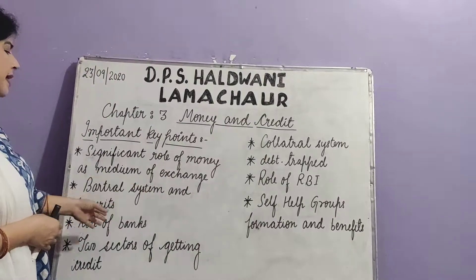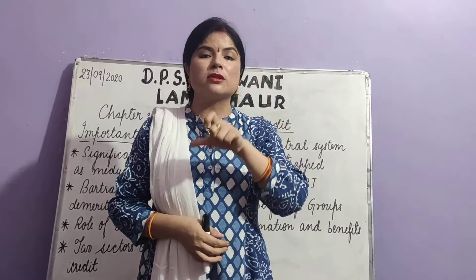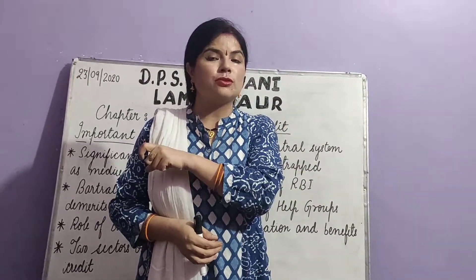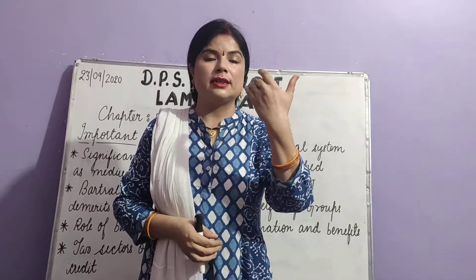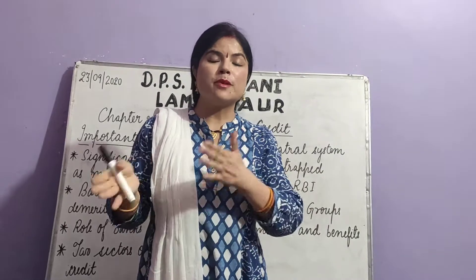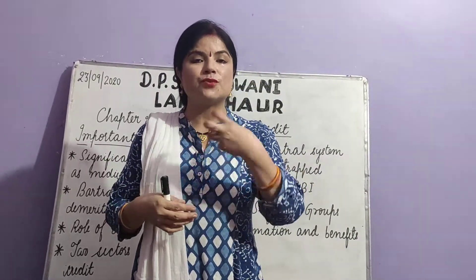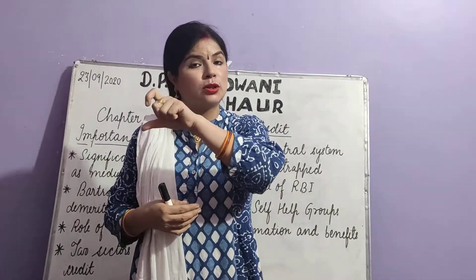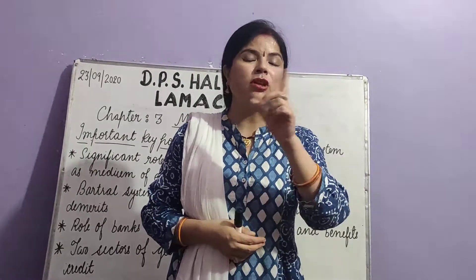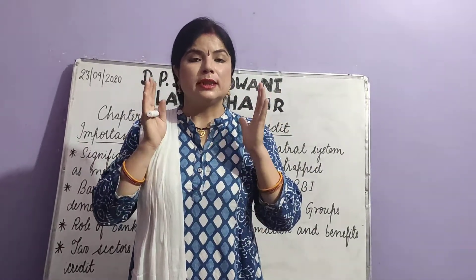Second key point: barter system and demerits. As already discussed, under the barter system we have to focus on coincidence of wants. It cannot be possible every time that we find the person who has what we need and who also has the same need which we have. This situation is not possible each and every time — that is the main demerit of the barter system.